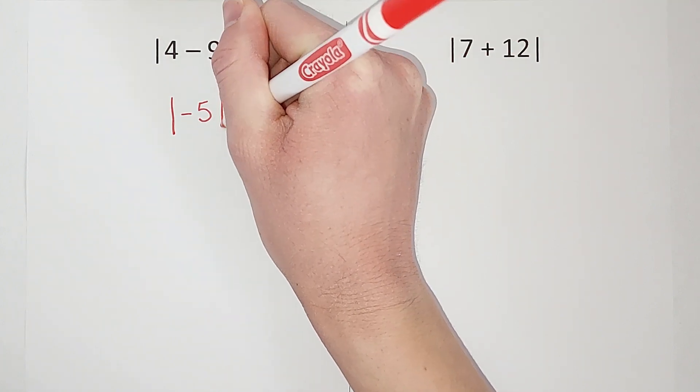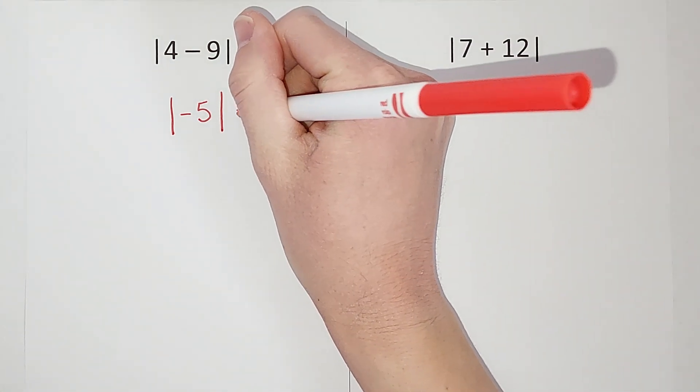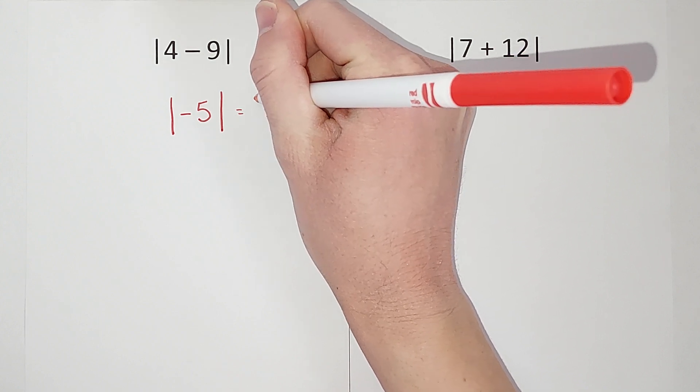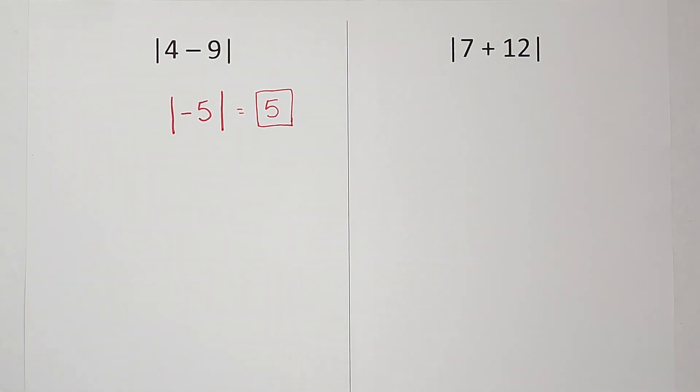Then we have our absolute value bars back. How far, what distance is negative five from zero? Well, it is five units from zero because we can't go a negative distance, right? So that's your answer.